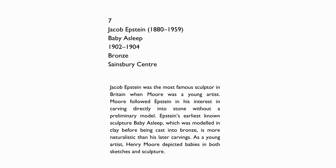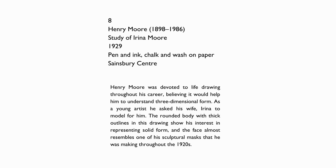Jacob Epstein was the most famous sculptor in Britain when Moore was a young artist. Moore followed Epstein in his interest in carving directly into stone without a preliminary model. Epstein's earliest known sculpture, Baby Asleep, which was modelled in clay before being cast into bronze, is more naturalistic than his later carvings. As a young artist, Henry Moore also depicted babies in both sketches and sculpture.